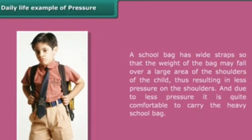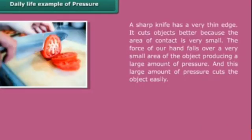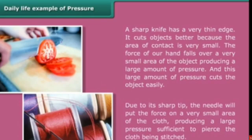A school bag has wide straps so that the weight of the bag falls over a large area of the shoulder, resulting in less pressure on the shoulders and making it comfortable to carry heavy bags. A sharp knife has a very thin edge — the area of contact is very small, so the force of our hand falls over a very small area, producing a large amount of pressure that cuts the object easily.